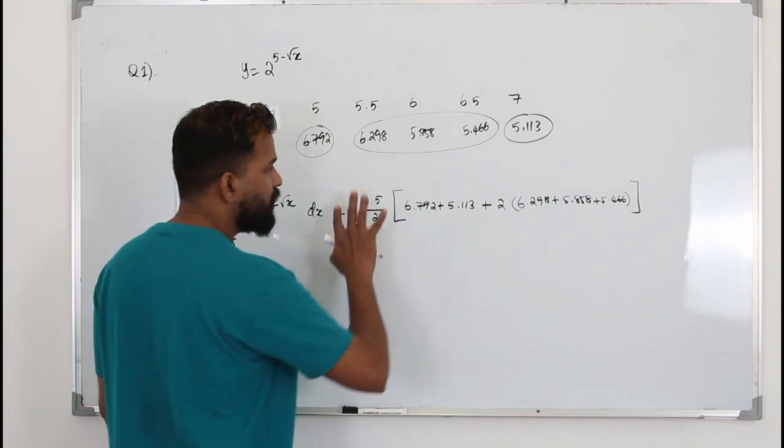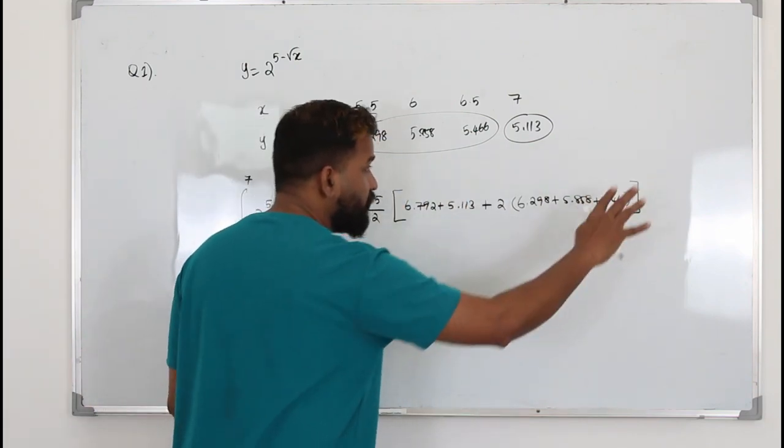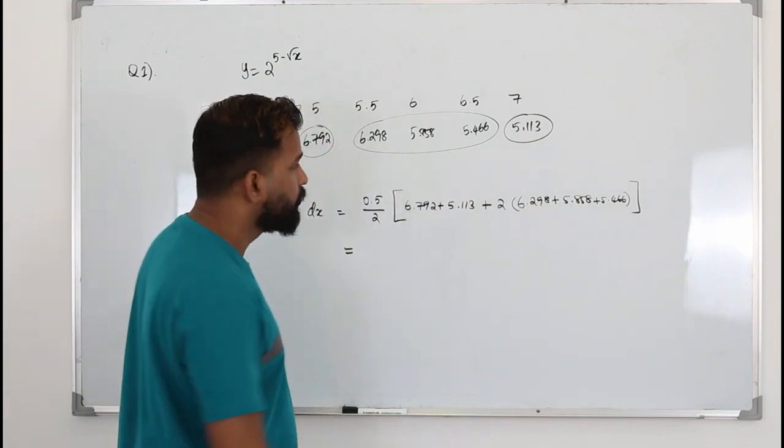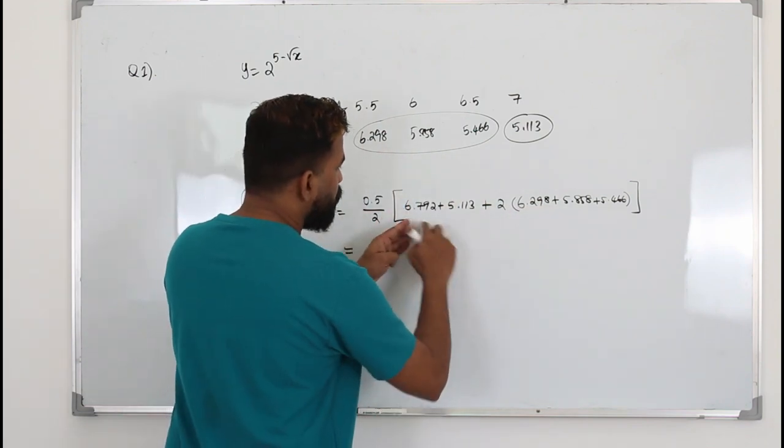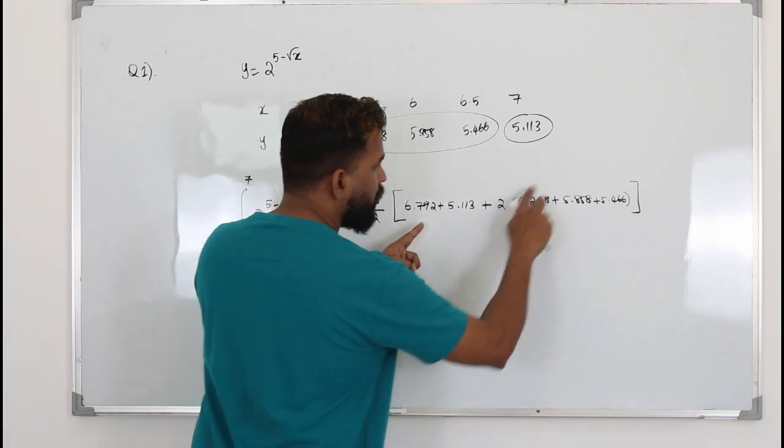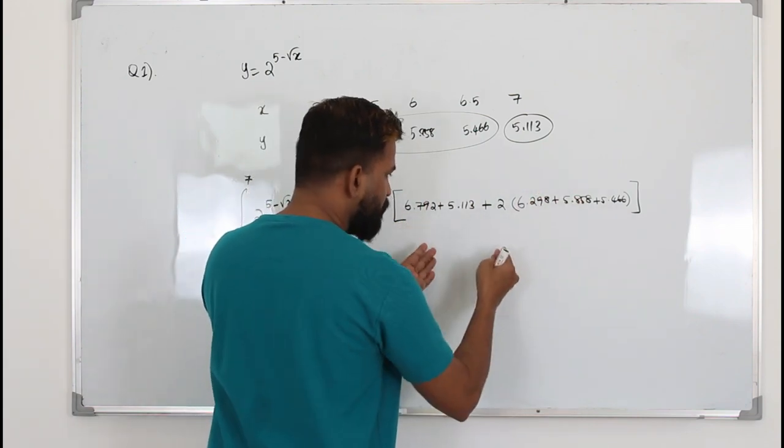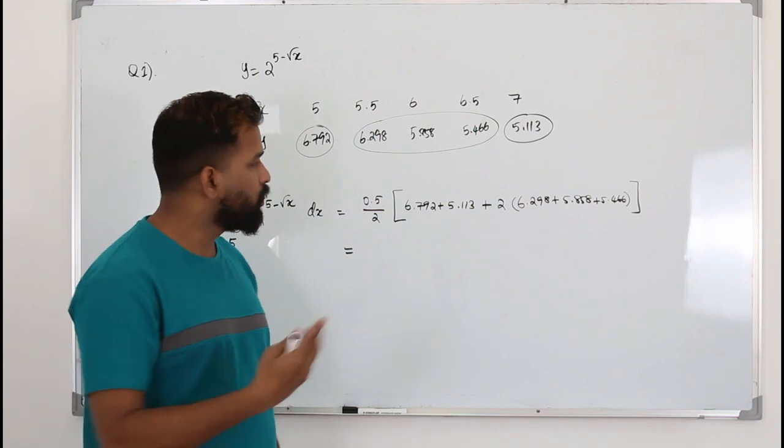What I suggest here, instead of entering everything in your calculator in one shot, do it part by part. Find this value and this value separately, plug it in, do it, so you won't make a mistake here.